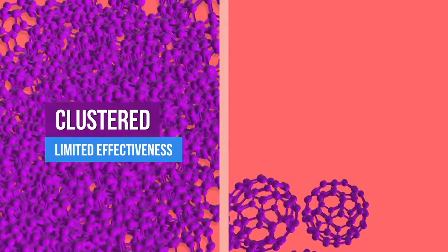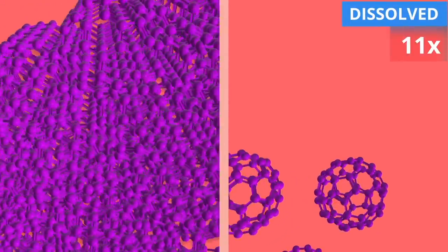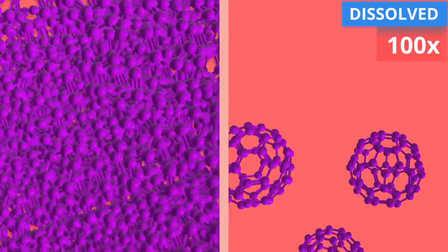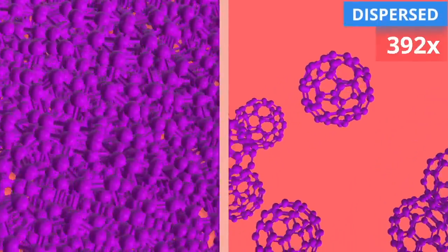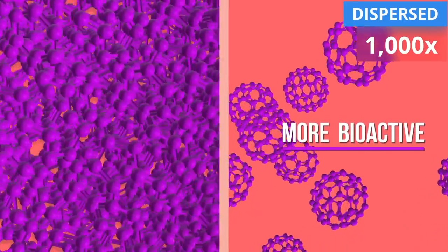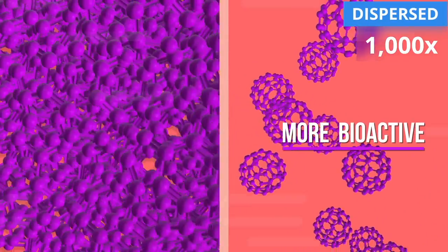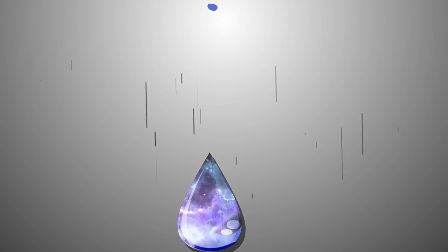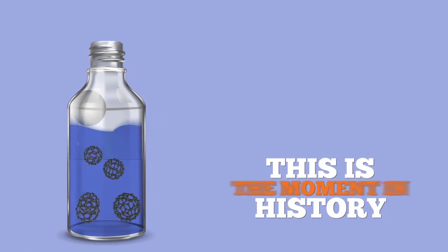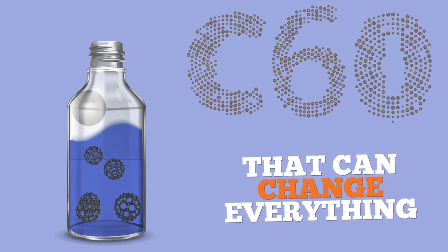When C60 molecules cluster, their effectiveness is limited. However, when C60 clusters are dissolved, they appear to be hundreds of times more bioactive. And when C60 molecules are dispersed, they appear to be thousands of times more bioactive. This is the genesis of C60 for a fuller life. This is a moment in history that can change everything.